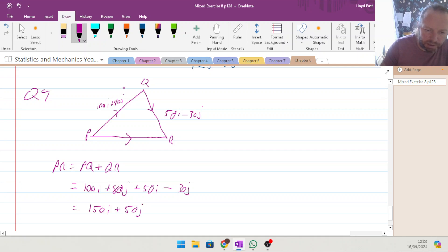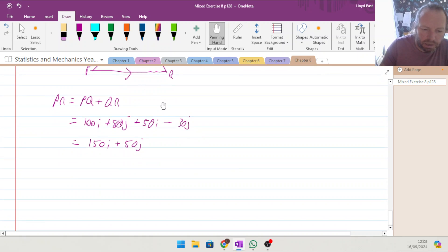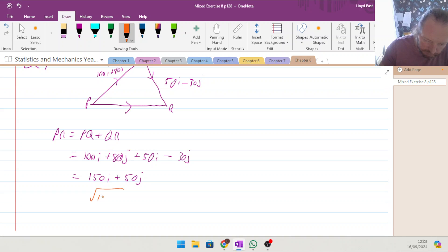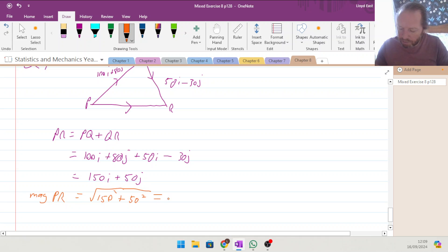Find the magnitude of the displacement. So that is the displacement, but the magnitude of it will be the length of it. So we need to do Pythagoras on that, which gives us 150 squared plus 50 squared, square rooted. So this is the magnitude of P, R. 150 squared plus 50 squared, 25,000. And the square root of that is 158.11 meters.